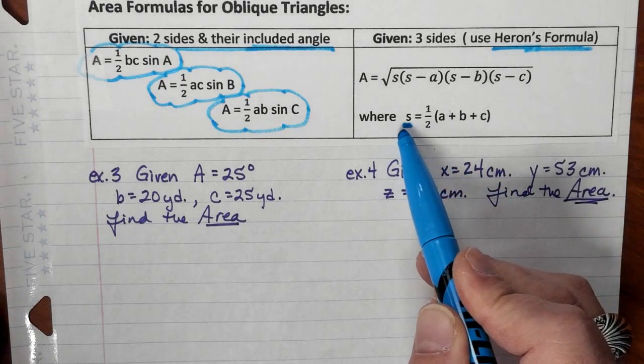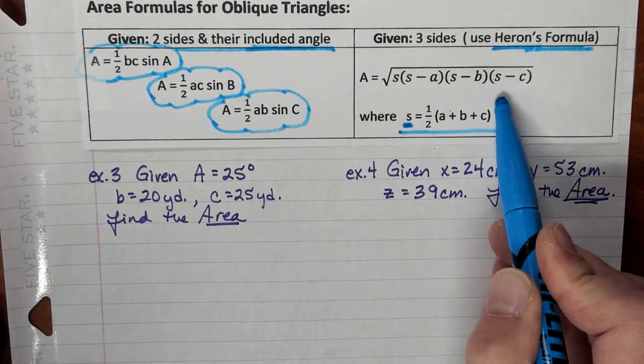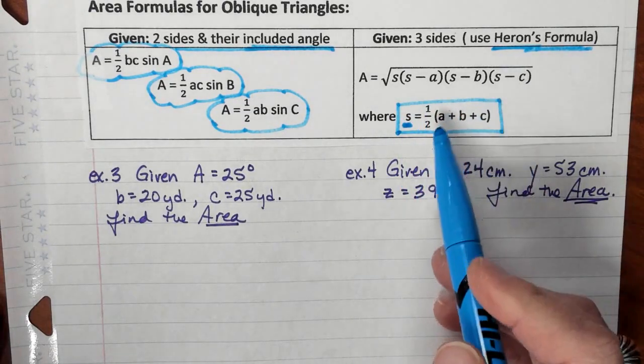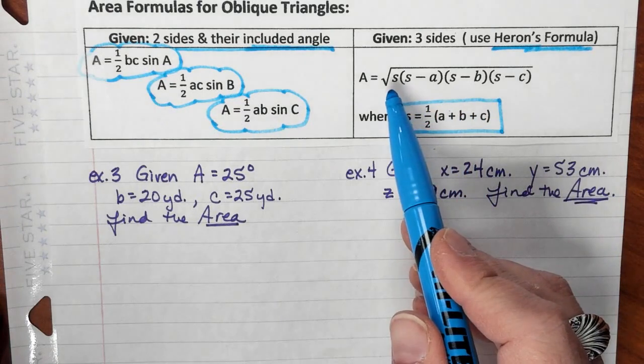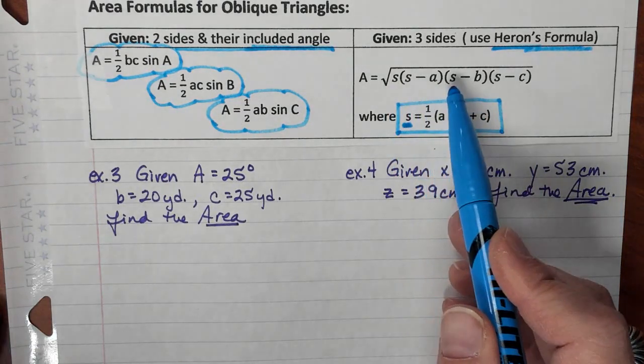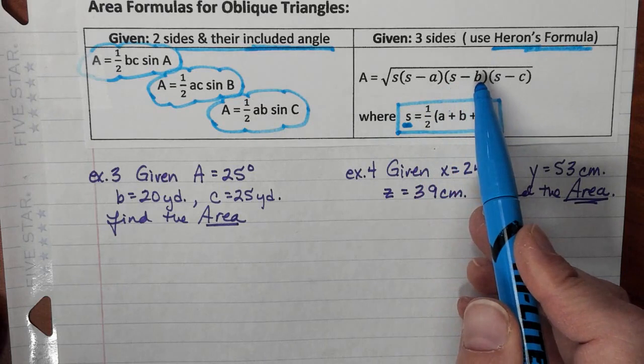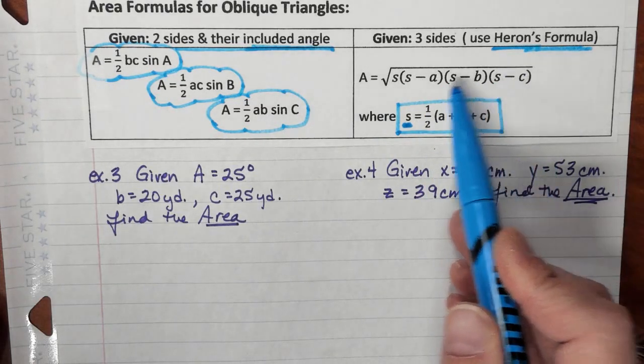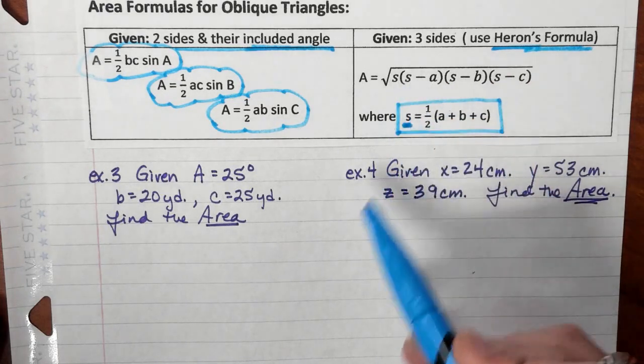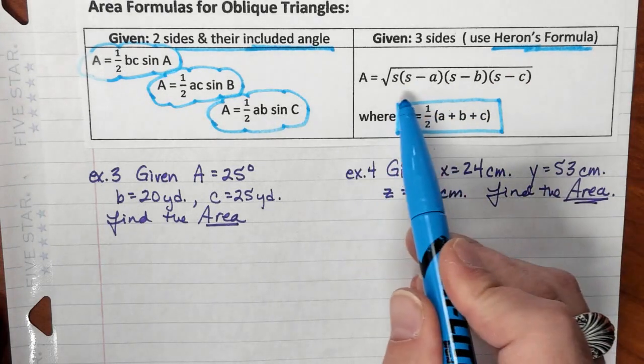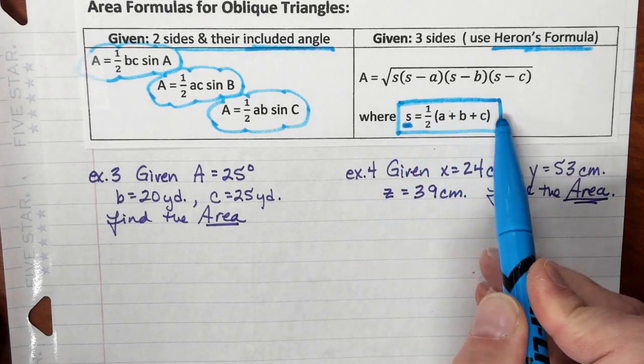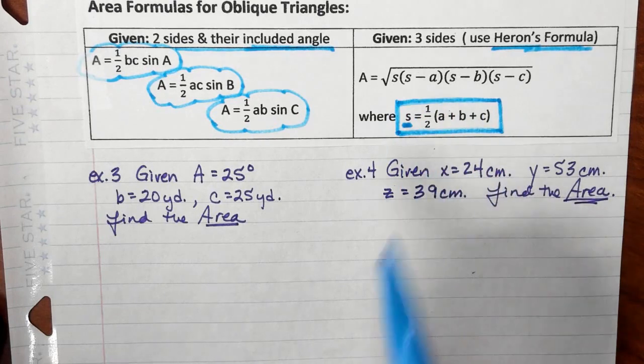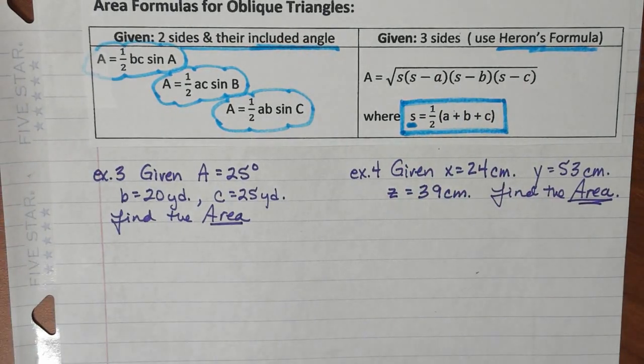You first have to calculate this S value, then you use that value and take the square root of that value times S minus side A times S minus side B times S minus side C. The product of all those numbers and then you take the square root gives you the area. It's kind of nice to just be able to have the sides of the triangle and then calculate the area.